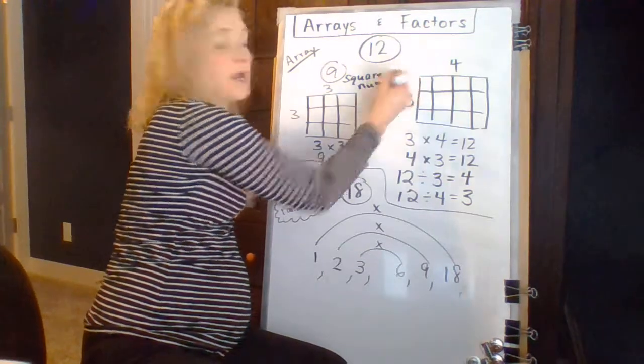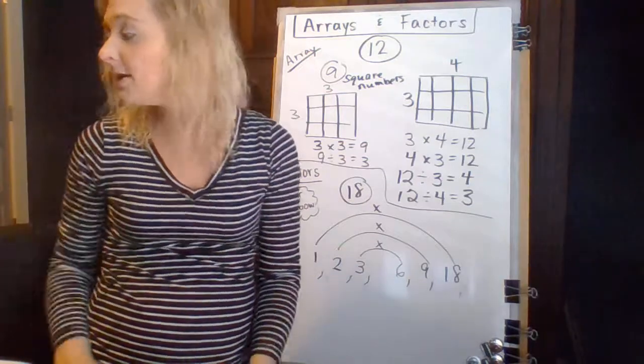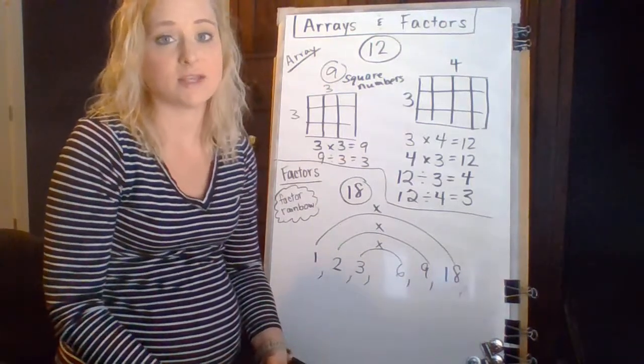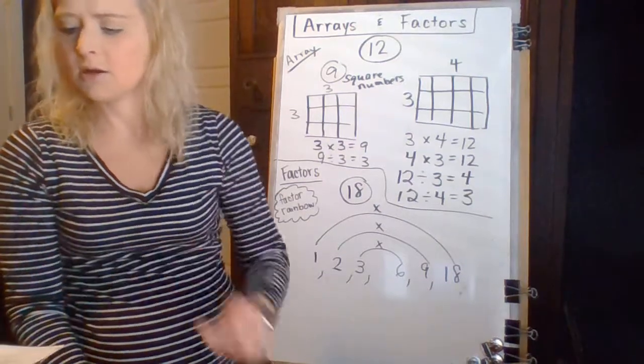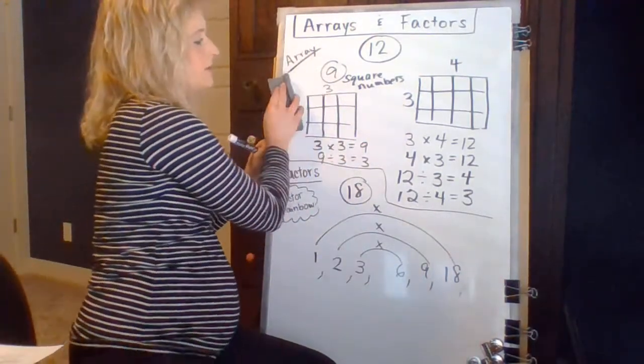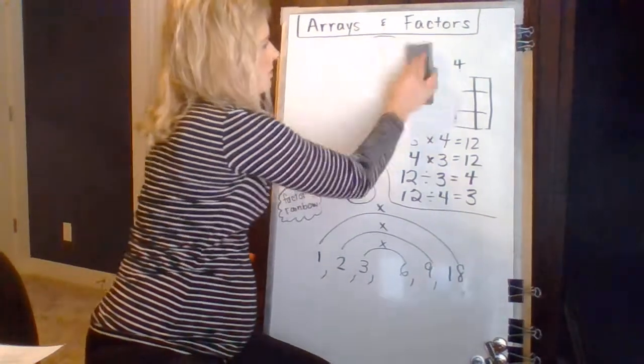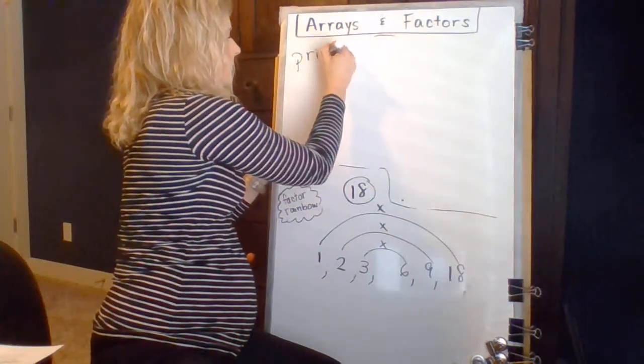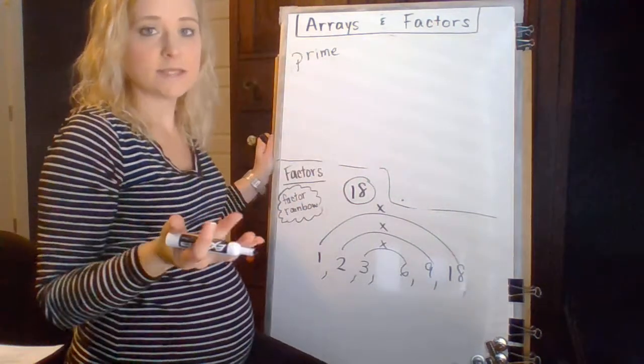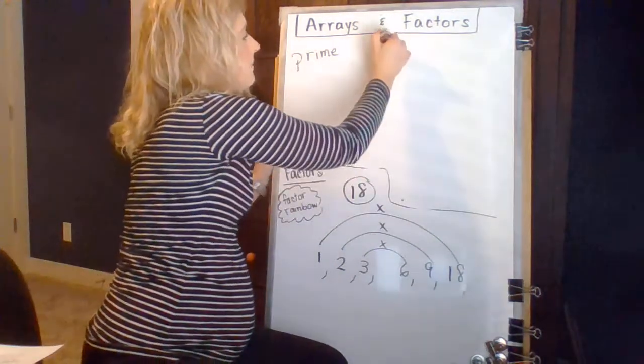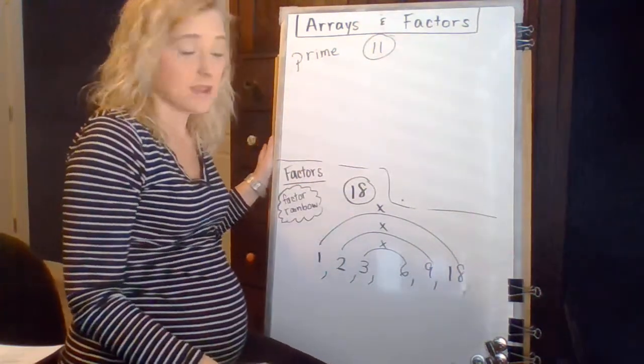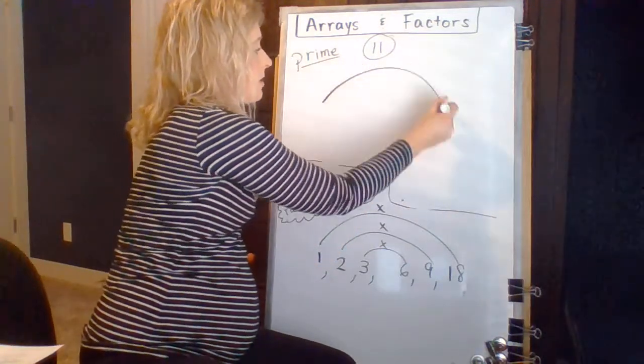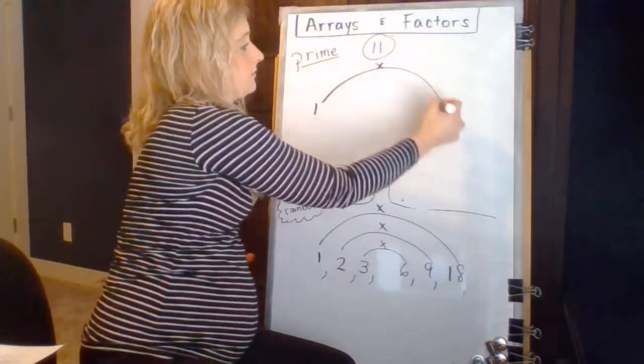So, I want to give you one example of a prime number before I stop. A prime number, like I said, is any number that only has two factors itself and one. So, let me give you an example that's not on here. If we take the number 11, let's go with 11. Is 11 prime? The answer is yes. 11 is prime. And why is it? Because when we start trying to make that factor rainbow, we know that one times 11 is 11. But are there any other factors of 11?